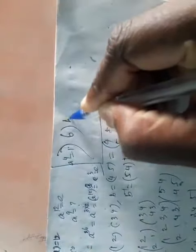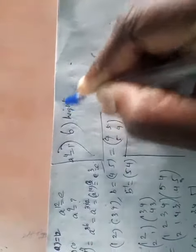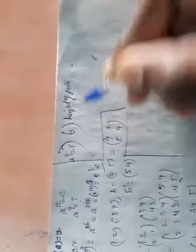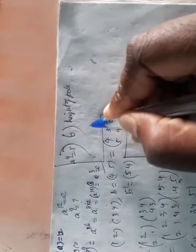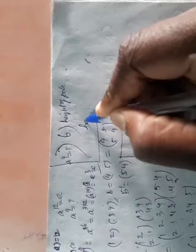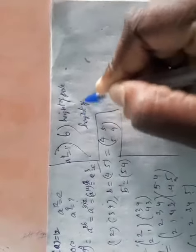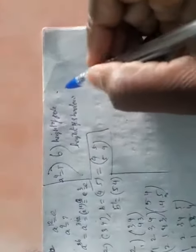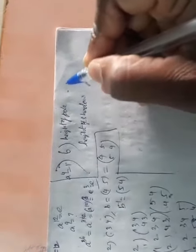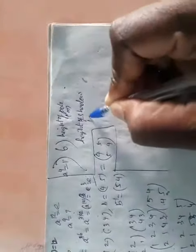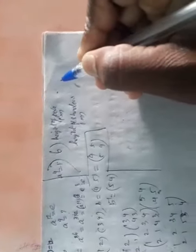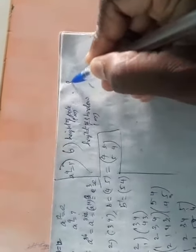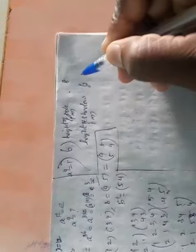We will find the height of the pole. First, take the height of the pole: the height of the pole is 8 meters. The shadow of the pole is 6 meters.